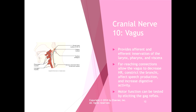Cranial nerve ten is the vagus nerve — a hugely important functional nerve. It provides afferent and efferent innervation of the larynx, pharynx, and viscera. Its far-reaching connections allow the vagus to decrease heart rate, constrict the bronchi, affect speech production, and increase digestive activity. A motor function of cranial nerve ten is tested by eliciting the gag reflex. Neurologists test cranial nerve functions in the head similarly to how sensory and motor testing is done on dermatomes and myotomes in the body.